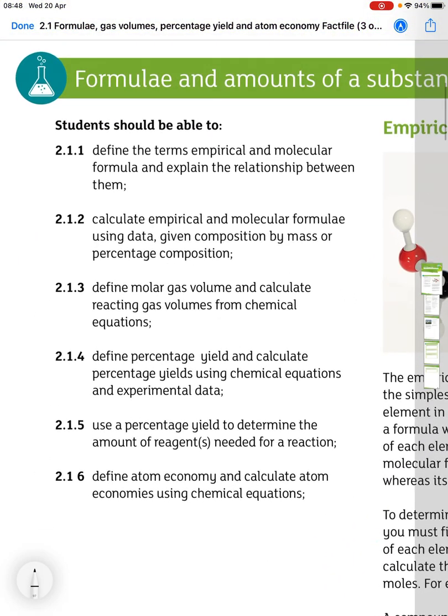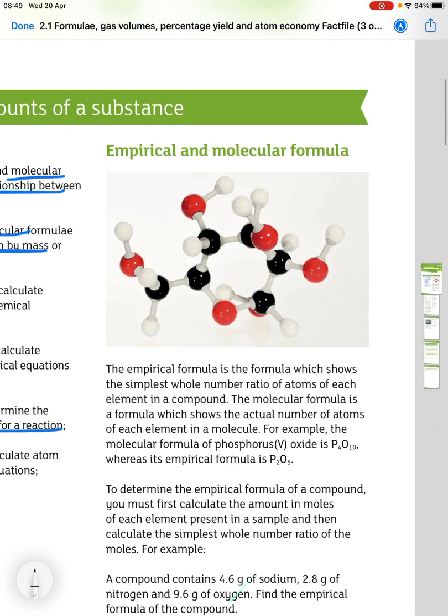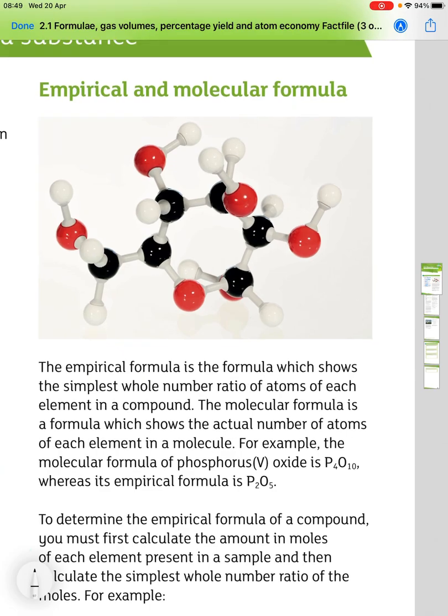This is topic 2.1, formula percentage yield and atom economy. For this topic you should be able to define the terms empirical and molecular formula and explain the relationship between them, calculate the molecular and empirical formula given data using composition by mass or percentage composition, define molar gas volume and calculate reactant gas volumes from chemical equations, define percentage yield and calculate percentage yields using chemical equations and experimental data, use percentage yield to determine the amount of reagents needed for a reaction, and define atom economy and calculate atom economies using chemical equations.